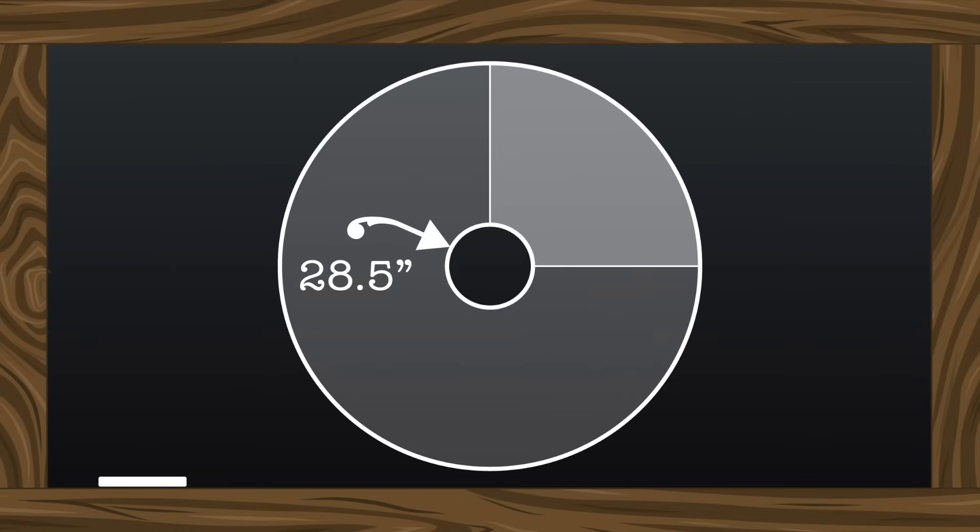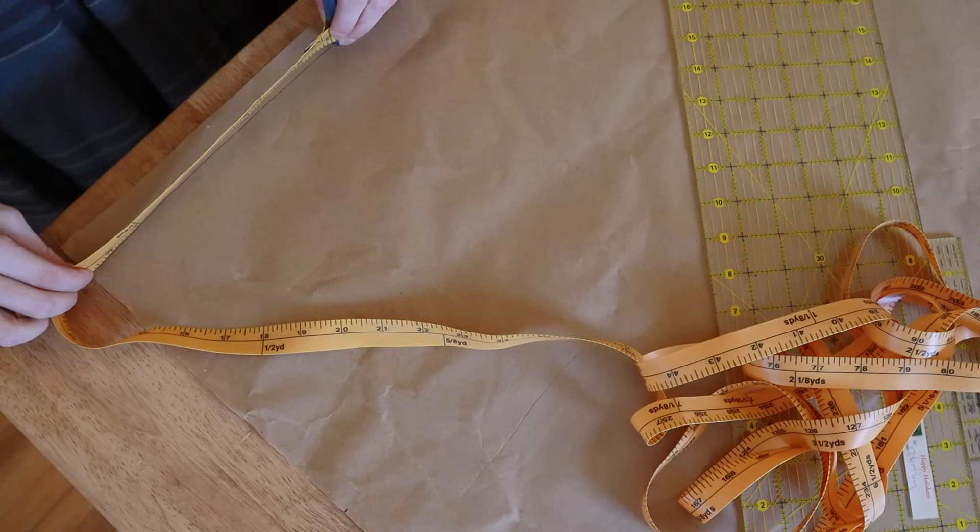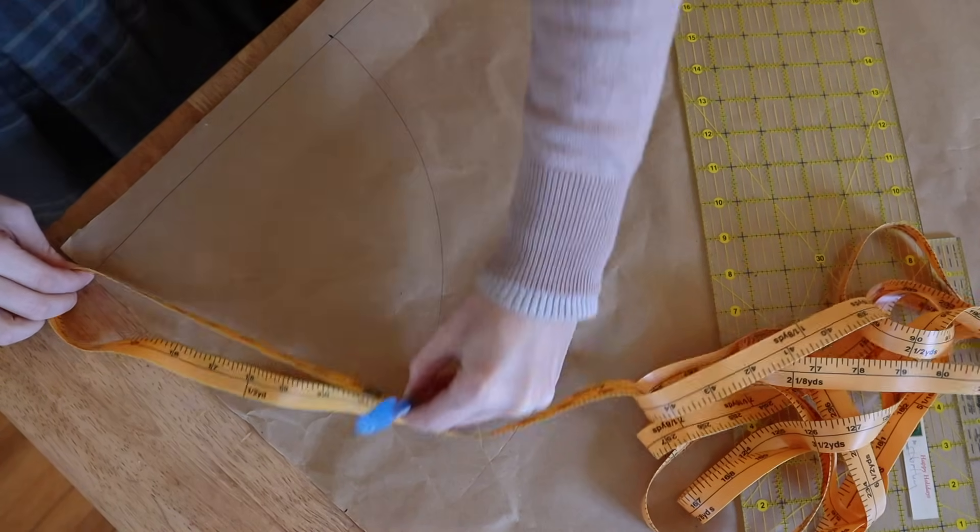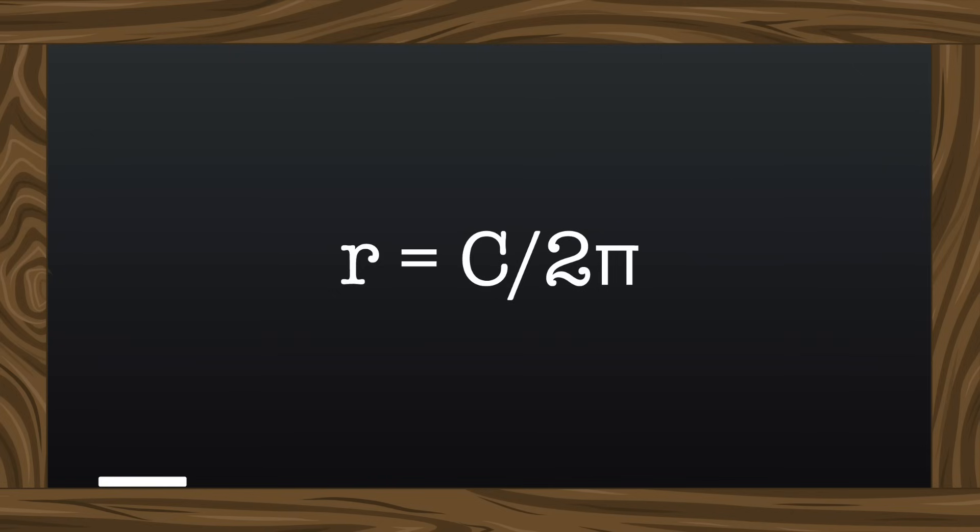Now we need to take this 28.5 inch waist circumference and find the radius. I have found this to be the easiest and most reliable way to actually draft it on paper.